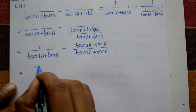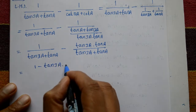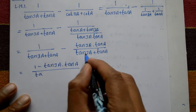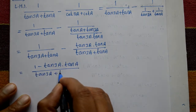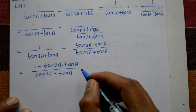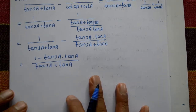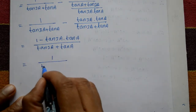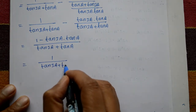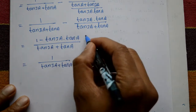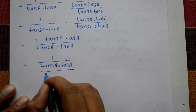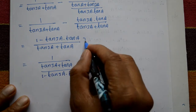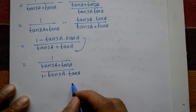Since both denominators are the same, we combine: (1 minus tan(3a) times tan(a)) divided by (tan(3a) plus tan(a)). Now shifting the numerator and denominator — this part shifts so we get 1 upon (tan(3a) plus tan(a)) divided by (1 minus tan(3a) times tan(a)).